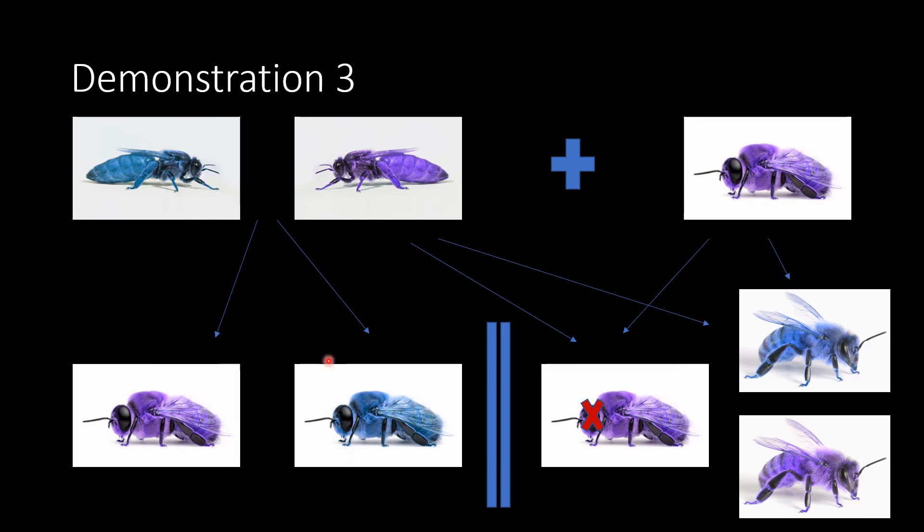Okay, just to give y'all a visual on what I mean whenever I say a diploid drone. So this queen, which has a blue and a purple chromosome, mates with probably her brother who is also a purple drone. So whenever this happens, she can choose not to fertilize it, making a viable haploid purple drone or a viable haploid blue drone.